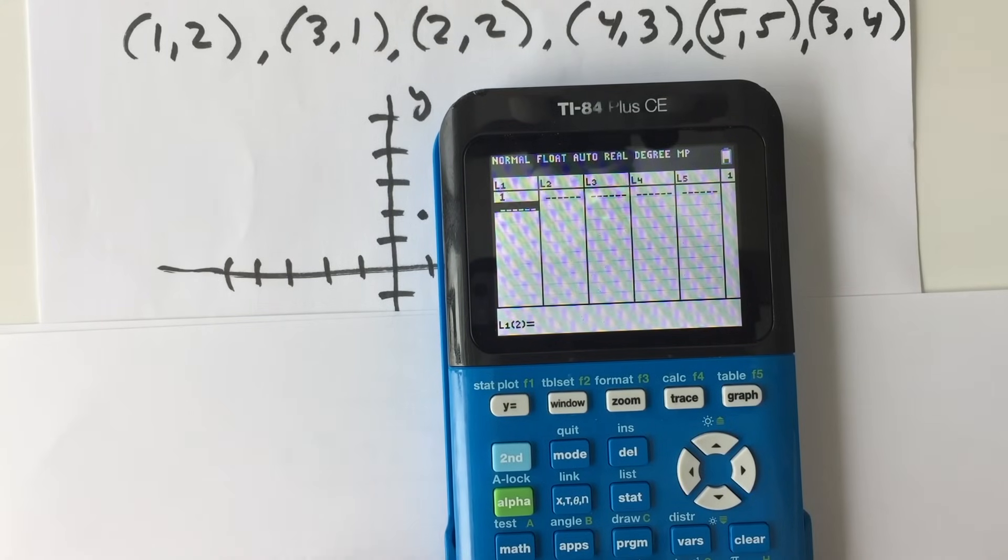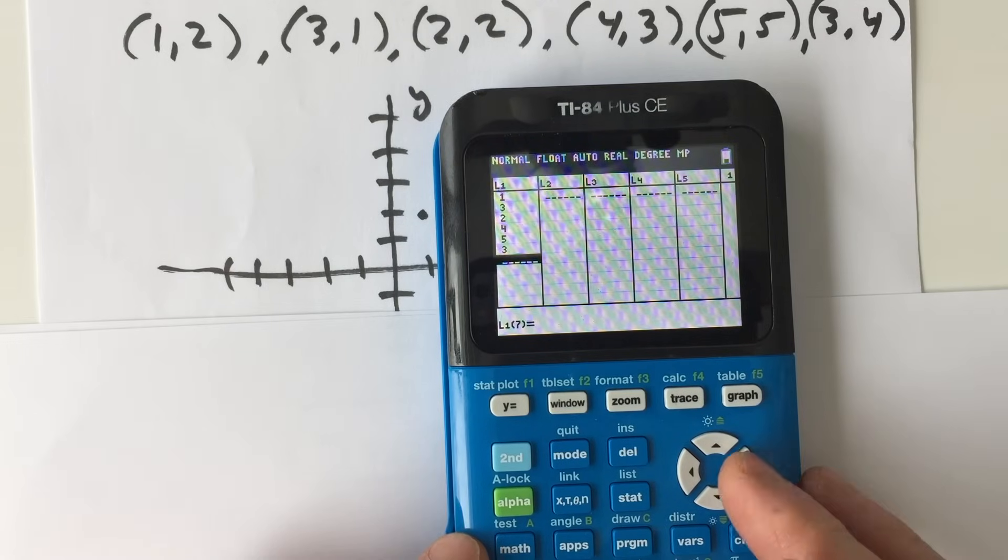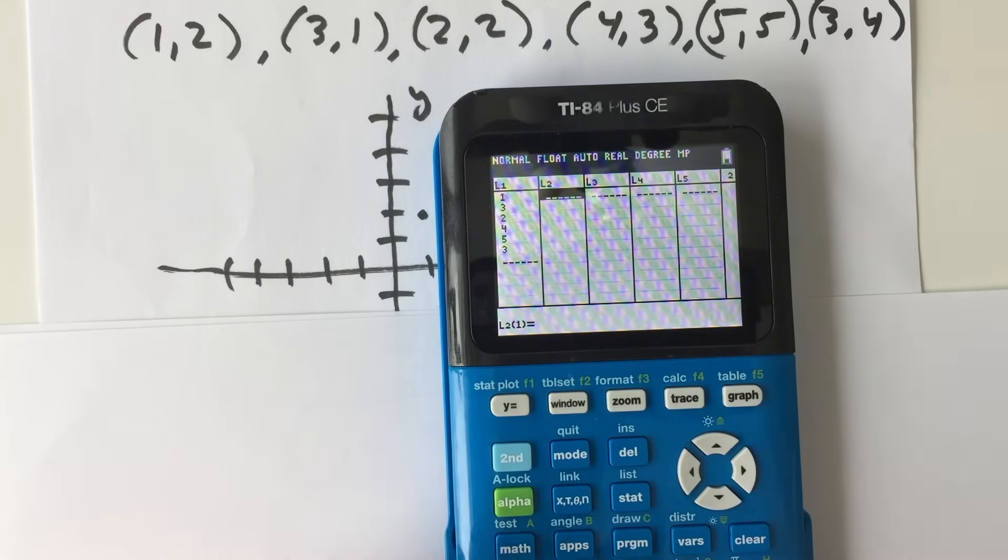So what we're going to do is go ahead and put 1, 3, 2, 4, 5, and 3, and if we arrow over to the next column, we're going to put our y-coordinates.